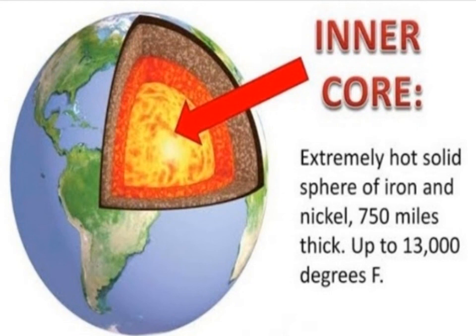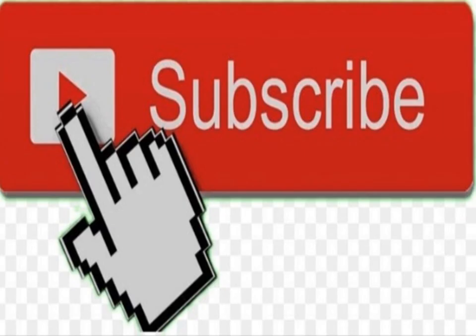The inner core is an extremely hot solid sphere of iron and nickel — as hot as the surface of the Sun, around 9,000 to 13,000 degrees Fahrenheit. Now you know a lot about the layers of Earth! Thank you all for listening and watching. If you appreciate my work, please subscribe to my channel.